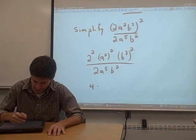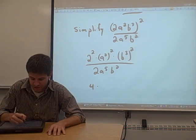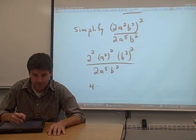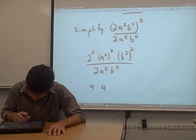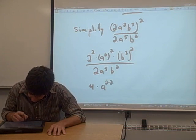a squared squared. When you have an exponent of an entire term that already has an exponent on it, you can multiply the two exponents. So this is a to the 2 times 2, a to the 2 times 2 power.